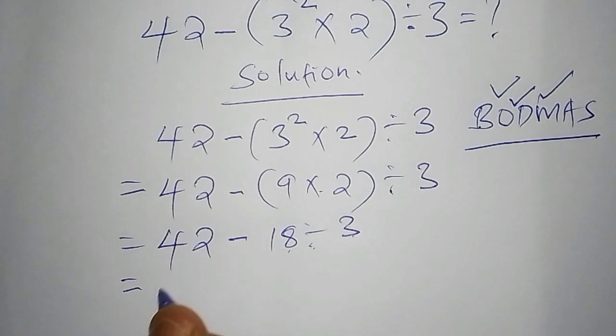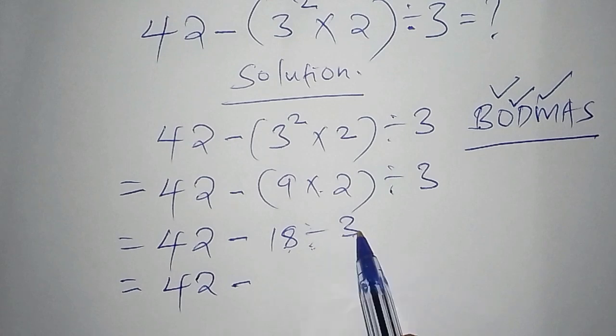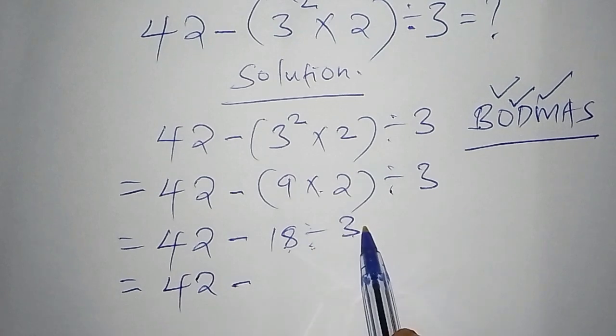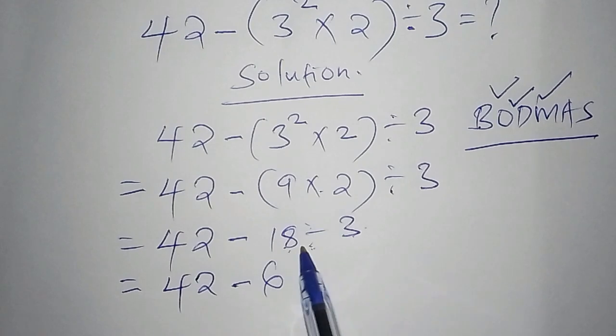So this one is equals to 42. Then we are going to subtract 18 divided by 3 because that is what we are working out first. 18 divided by 3 is 6. So now we are done with division.